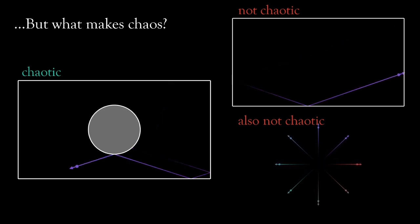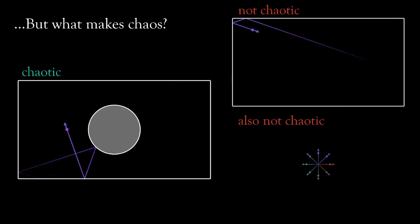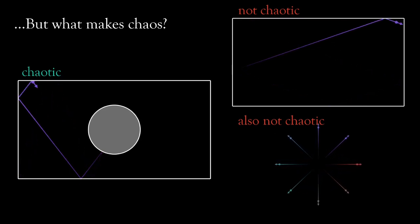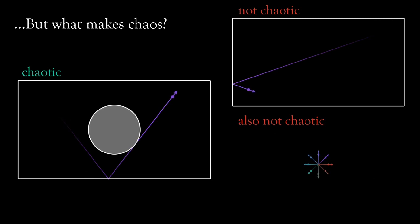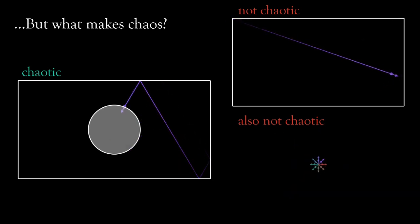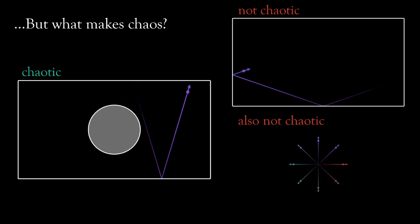Now, on the left we have the standard chaotic system that we have been using so far and on the right hand side I have two systems that are actually not chaotic. The top one is just the standard billiard without the disk in the middle and the bottom one is some balls diverging to infinity exponentially fast.